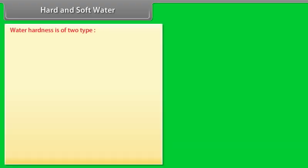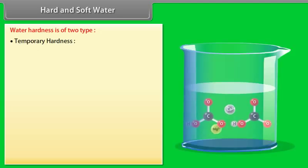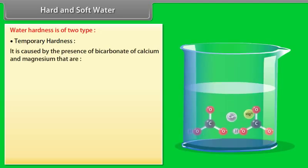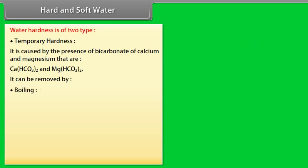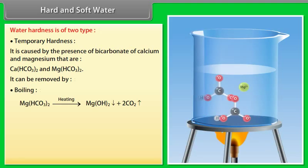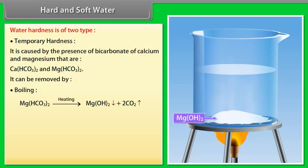Water hardness is of two types. Temporary hardness is caused by the presence of bicarbonate of calcium and magnesium. It can be removed by boiling. Soluble bicarbonates change to carbonates which are insoluble and get precipitated.